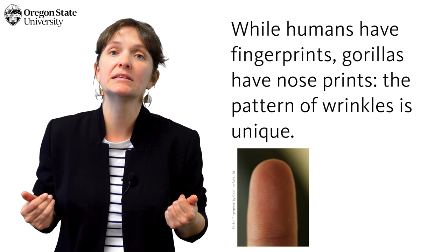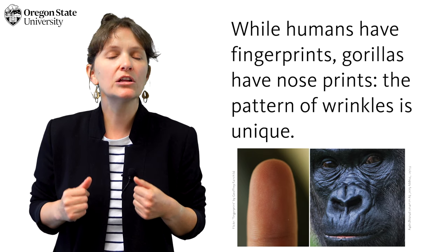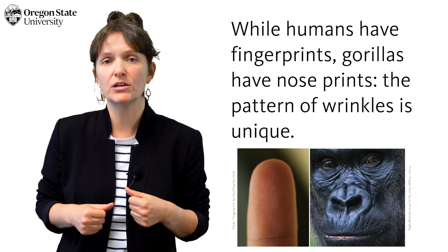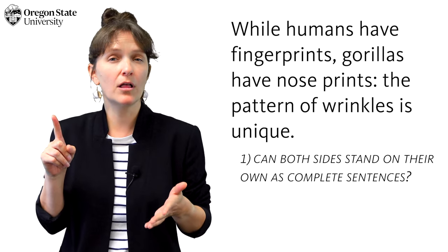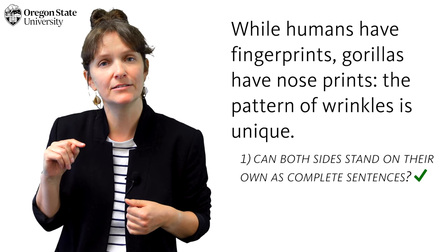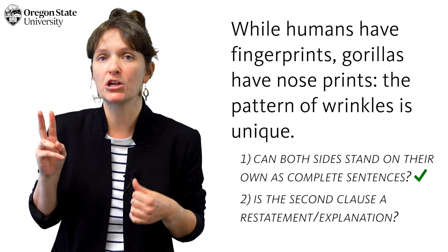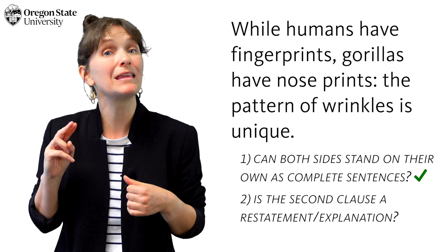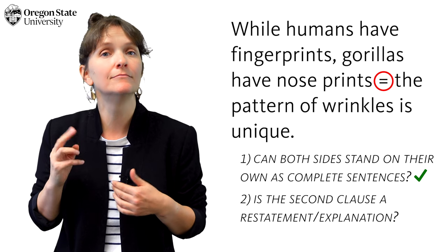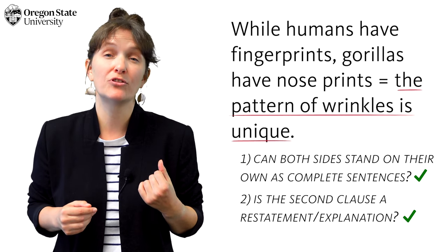For example: while humans have fingerprints, gorillas have nose prints: the pattern of wrinkles is unique. We can check our colon usage here by asking two questions. One: can the clauses on either side of this colon stand on their own as complete sentences? Yes. Two: is the second clause a restatement or explanation of the first so that we could connect them with an equal sign? Yes. In this case, the second clause is an explanation of the term "nose print" and how it's like a human fingerprint.